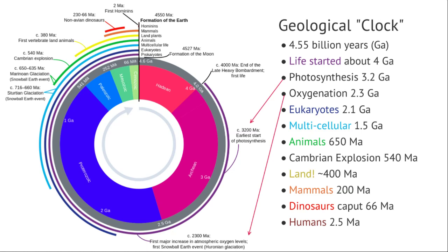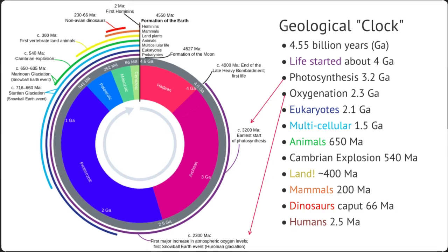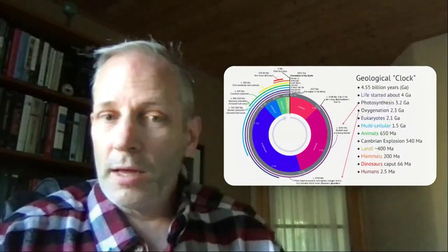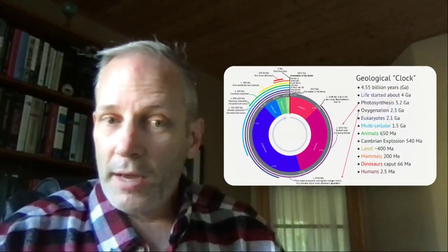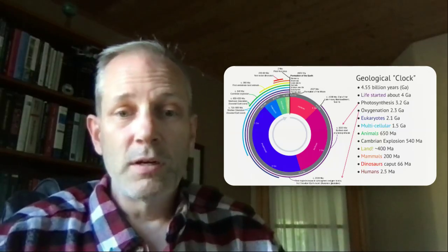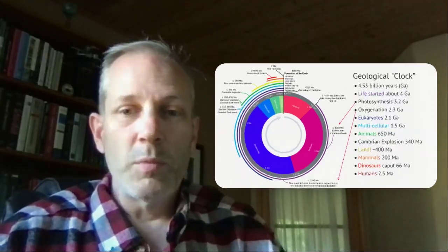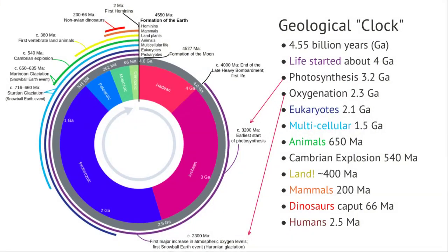The Earth itself is 4.5 billion years old, and life started not that long after — about 4 billion years ago, after the end of the heavy bombardment. Then photosynthesis roughly at 3:30 on this clock, and then oxygenation by 6 p.m.